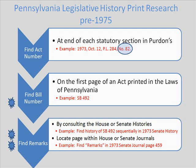The process for conducting a Pennsylvania legislative history for laws that were passed before 1975 is essentially a three-step process. The first step is to locate the act number for a piece of legislation. To do this, if you're looking in Purdon's, at the end of each statutory section you'll see a citation for a law that was passed. It'll give the year, the date it was passed, the pamphlet law number — which is in effect the page number within the Laws of Pennsylvania for that year — and then finally the act number.